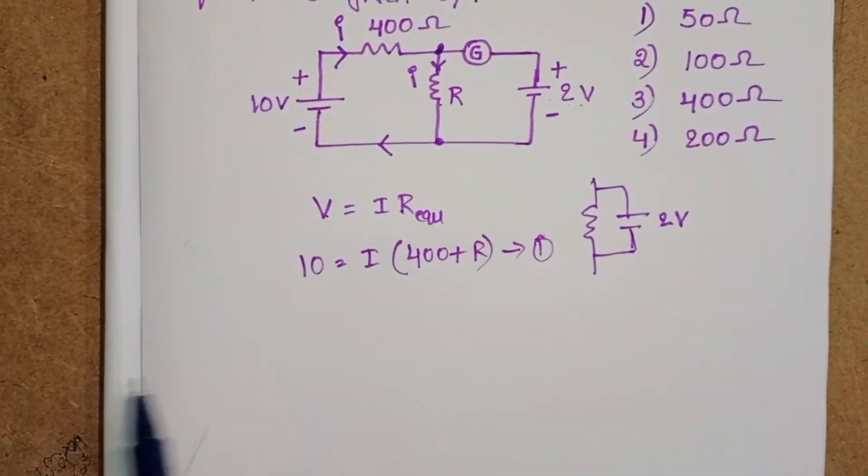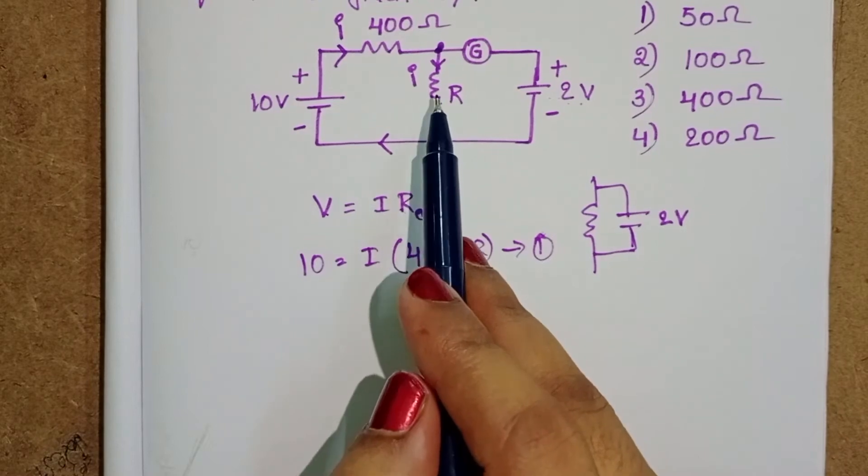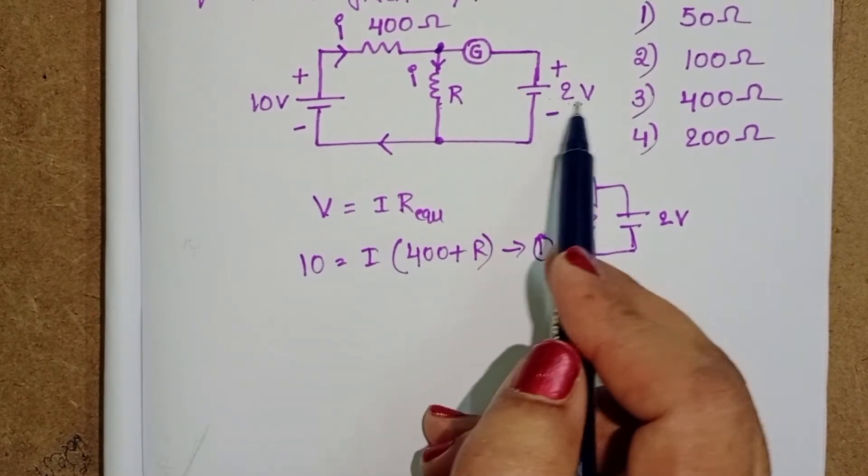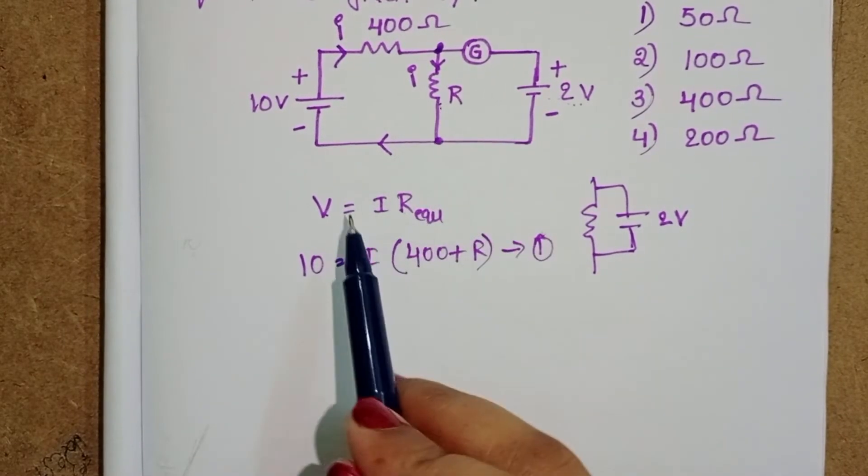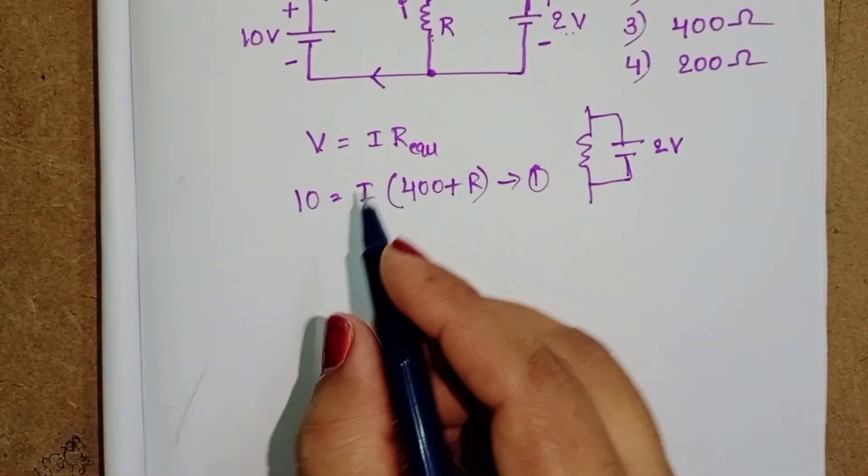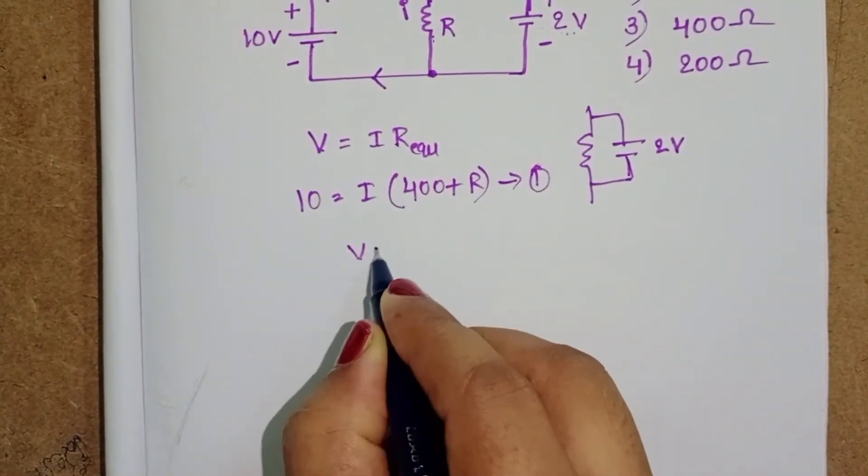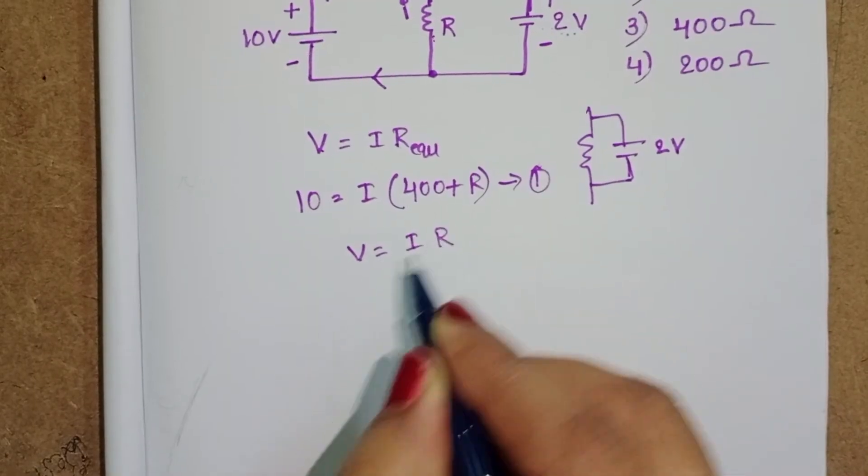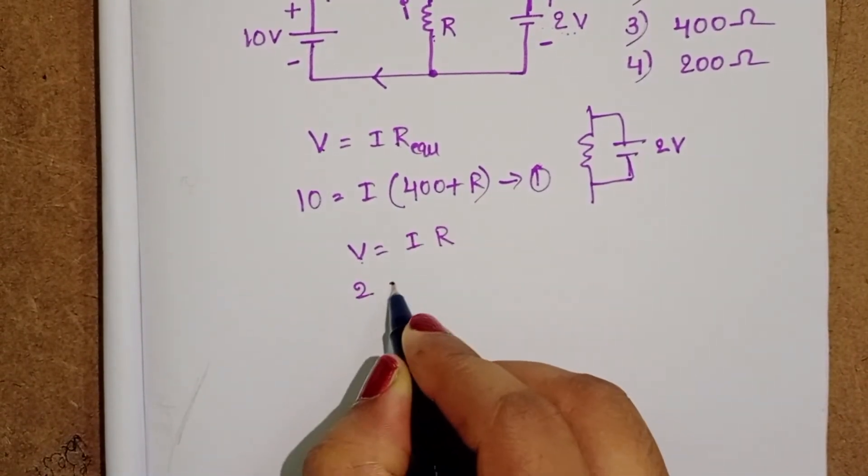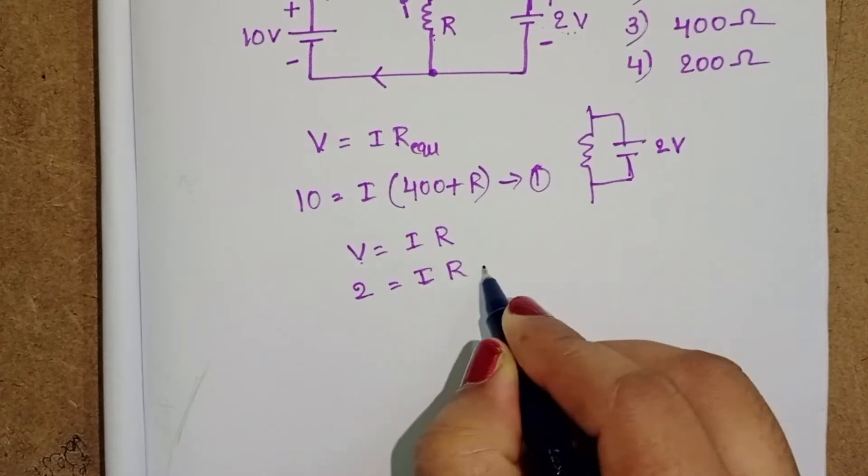And at this resistor, we know potential difference is 2 volt. Current is same only. I current is passing through this resistor. Here also take Ohm's law. V equals to IR. V equals to 2 volt. Current is same. We don't know the resistance.